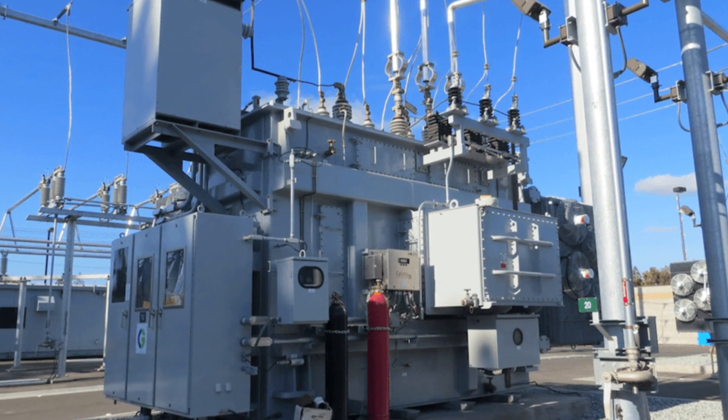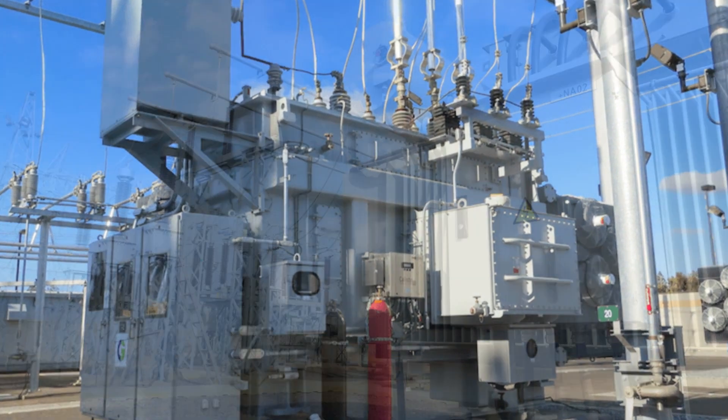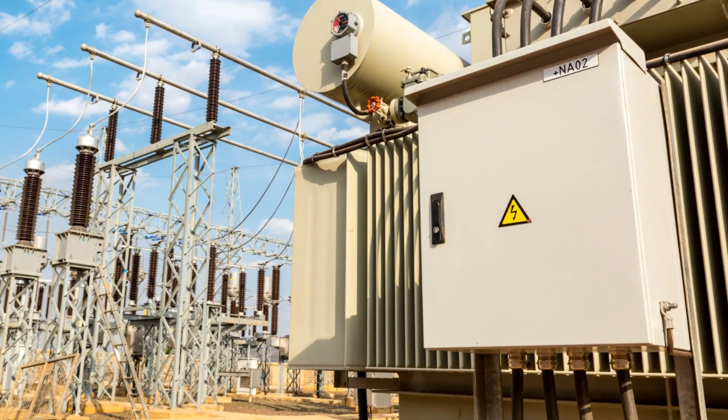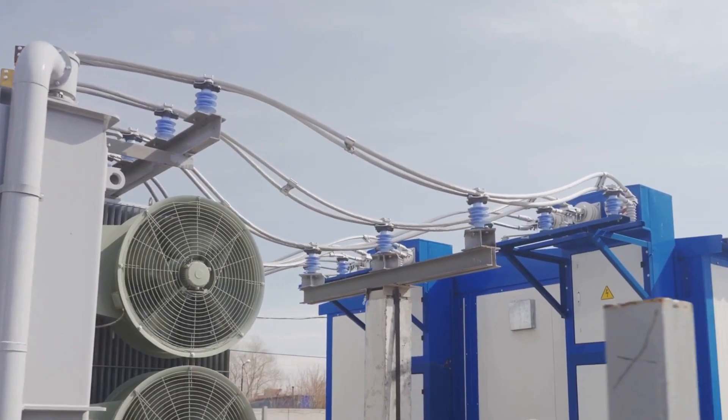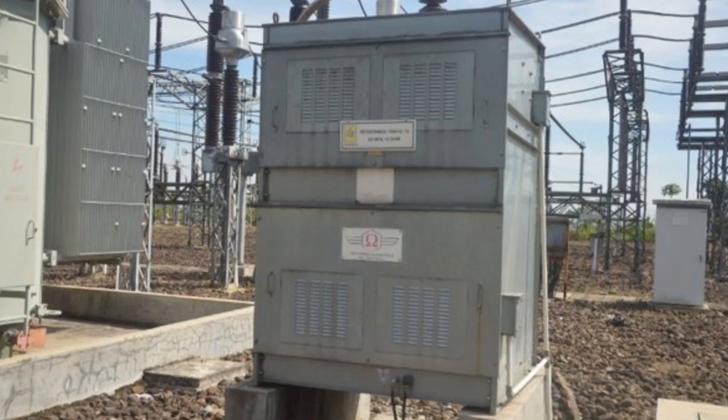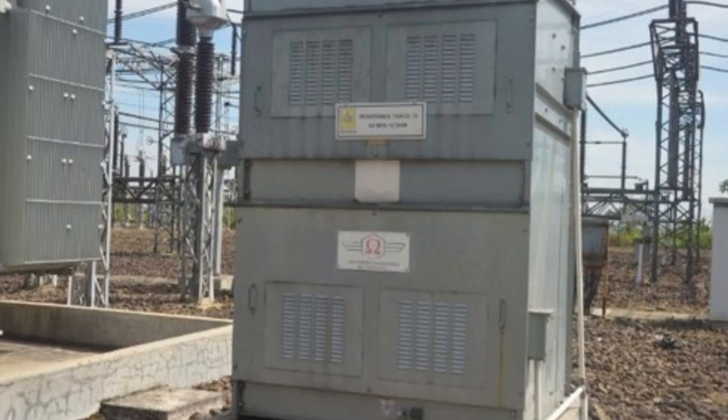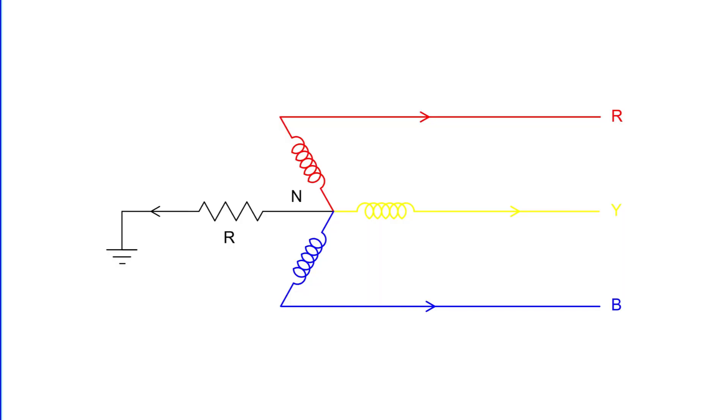Ever wondered what neutral grounding resistance is? Let's step into the world of electrical engineering to explore this fascinating concept. Neutral grounding resistance, or NGR for short, is a technique often employed in three-phase electrical systems. It involves connecting the neutral point of the system to the earth using a resistor, hence the term resistance grounding.